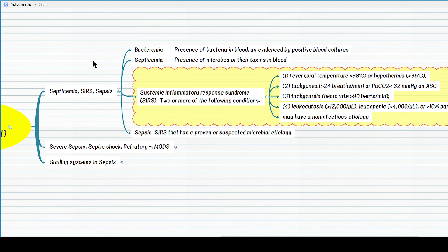Now, true or false, SIRS is always due to infectious etiology. That is false. SIRS may have non-infectious etiologies such as inflammation. Why this is important? Because only the type of SIRS that has a proven or suspected microbial or infectious etiology is called sepsis.